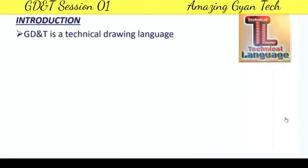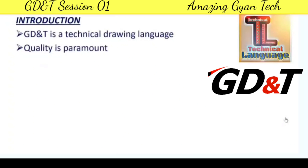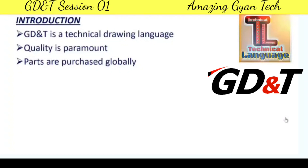GD&T is a technical drawing language which is used as a standard throughout the world. In the manufacturing environment, quality is very important and we must control the cost, minimize waste, and use resources very effectively. To achieve these things, many parts are now purchased globally — components need not be manufactured in the same organization or machine shop. If a similar part is being supplied by a supplier for a lower price outside the company, companies are ready to purchase those parts.